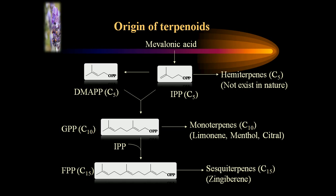Coming to the biosynthesis and origin of terpenoids: acetate in the presence of acetyl coenzyme A converts to HMG-type coenzyme A, which combines to form beta-hydroxy-beta-methylglutaryl coenzyme A. This, in the presence of reductase, forms mevalonic acid. Kinase then acts on this by introducing a phosphate group, converting it to mevalonic acid-5-pyrophosphate-3-phosphate. After decarboxylation, it converts to isopentenyl pyrophosphate (IPP), which is the end product of the mevalonate pathway.